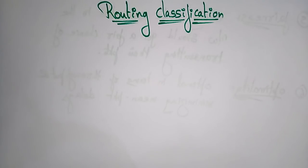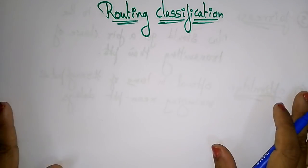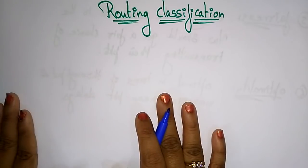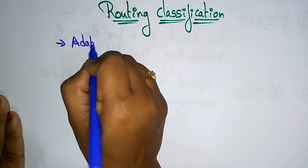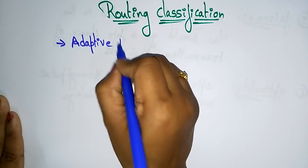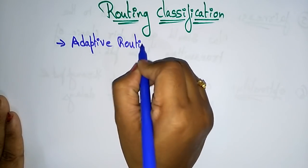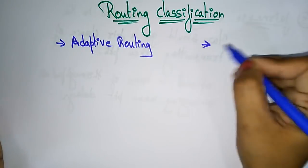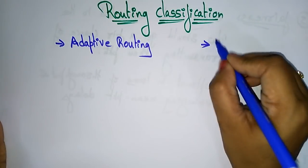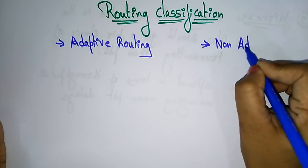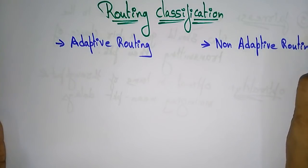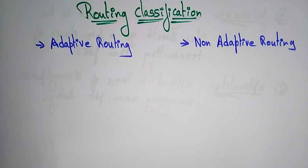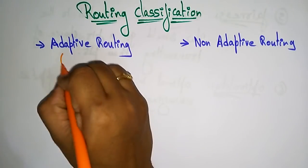The routing classifications are of two types: one is adaptive routing and the other is non-adaptive routing. So there are two types of routing classifications — adaptive and non-adaptive.